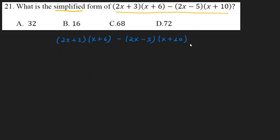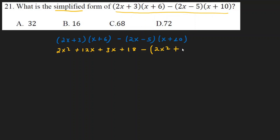To simplify the algebraic expression, the first step is to eliminate the parentheses. Expanding: 2x times x gives 2x squared, and 2x times 6 gives 12x. Then 3x, and the constant 18. With the minus sign applied, we get minus 2x squared, and 2x times 10 gives 20x.